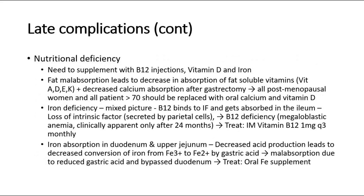Other late complications include nutritional deficiency, where supplementation with B12 injections, vitamin D, and iron is needed. Fat malabsorption leads to decreased absorption of fat-soluble vitamins and decreased calcium absorption after gastrectomy. All postmenopausal women and all patients over 70 years should be replaced with oral calcium and vitamin D. B12 binds to intrinsic factor and is absorbed in the ileum; loss of intrinsic factor during gastrectomy causes B12 deficiency — treat with IM vitamin B12. Iron absorption occurs in the duodenum and upper jejunum; decreased acid production leads to decreased conversion of iron by gastric acid, and malabsorption due to reduced gastric acid and bypassed duodenum — treat with oral iron supplement.